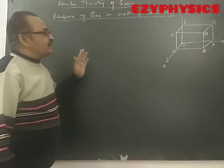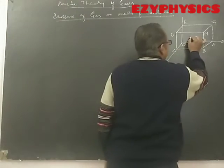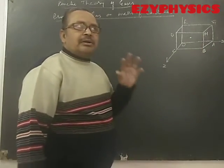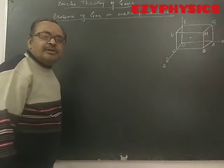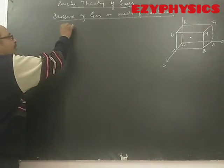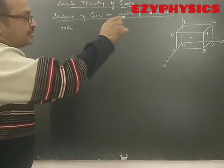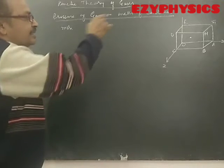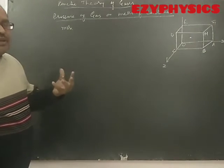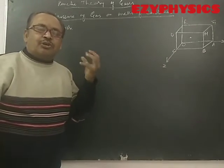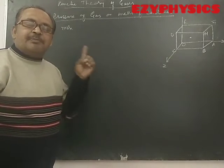Now if I consider one molecule of gas and its movement along the x-axis, it will be moving along x-axis and will have a momentum of MVx. It will hit the wall of the container — which is ABHG — with a momentum of MVx. Because we are considering the gas molecule to be perfectly elastic, its collision with the wall will also be a perfectly elastic collision.